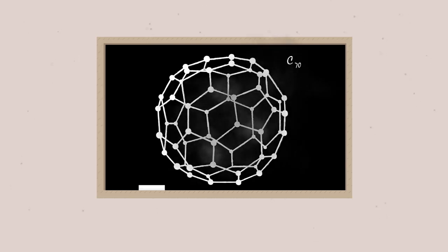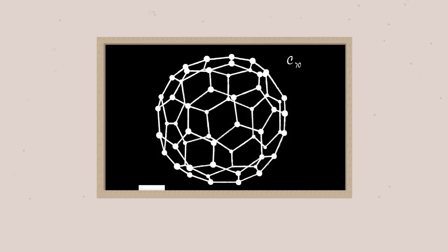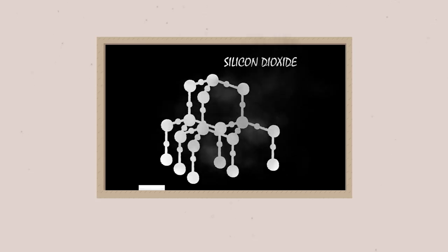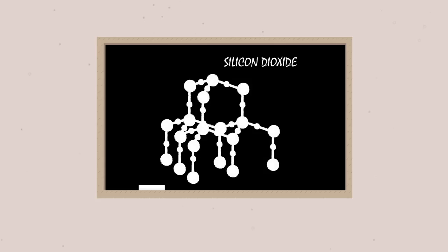C70 is a fullerene, a carbon molecule shaped like a rugby ball, closely related to the Buckminster fullerene. Silicon dioxide is a giant covalent structure, and just like diamond, but has oxygen atoms bridging between four coordinate silicon atoms.